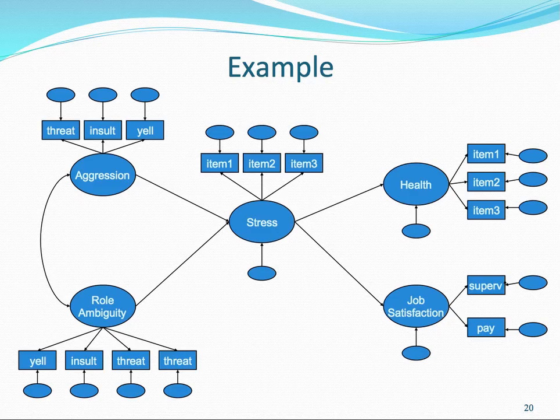We have the direct relationships between the particular independent variables and the dependent variables. Together, this forms the latent variable path analysis.